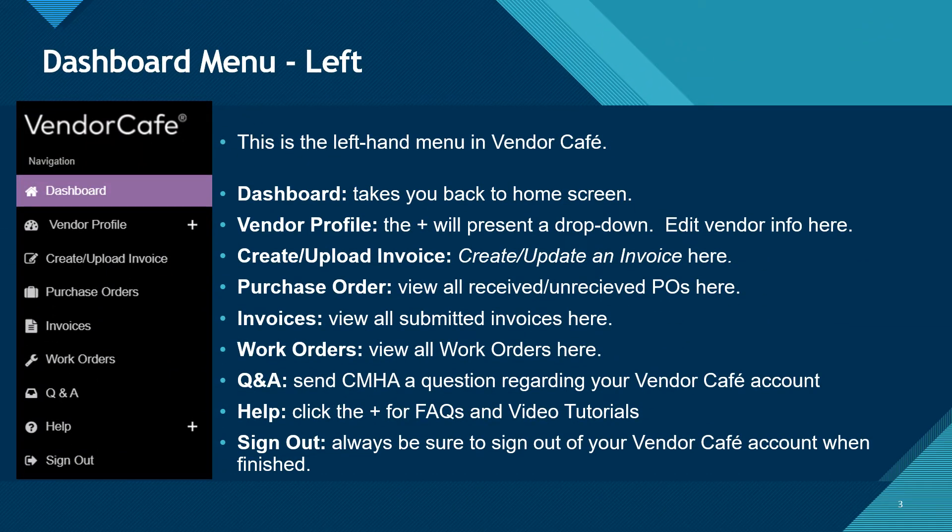The first menu we will discuss is the left-side menu. This menu is present during all your activities in Vendor Cafe. The top button is the Dashboard button, or Home Screen button, which will return you to the dashboard that we reviewed in the last slide.